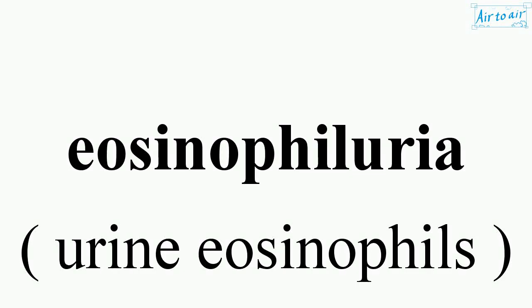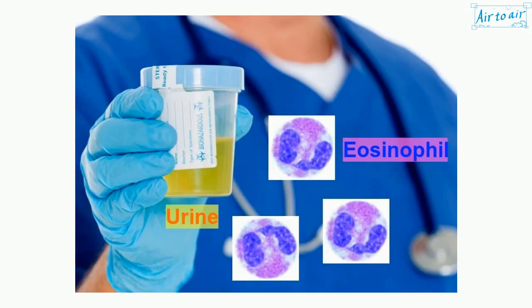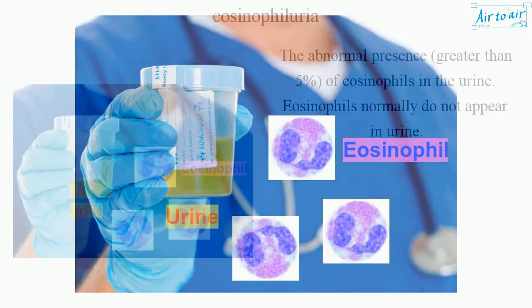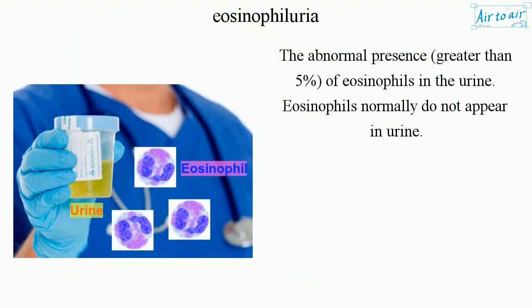Eosinophiluria: the abnormal presence of greater than five percent of eosinophils in the urine.